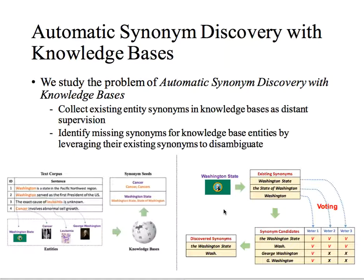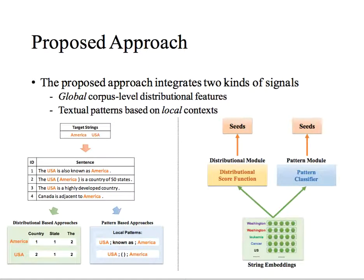Specifically, we let their existing synonyms vote to rank the candidate strings, which may alleviate the ambiguity problem. For synonym discovery, we propose an approach to integrate two kinds of signals: the global distributional features and the textual patterns based on local contexts.